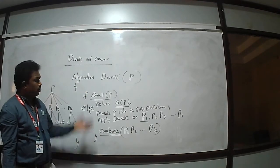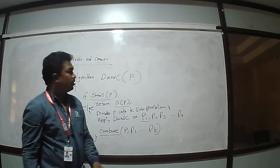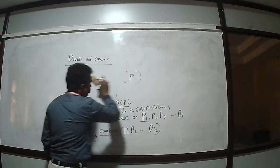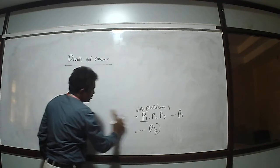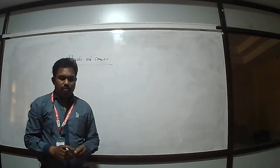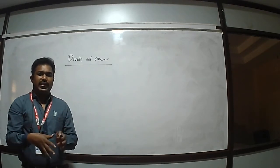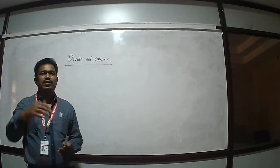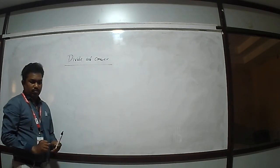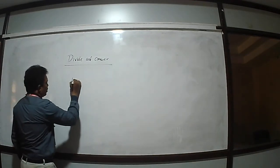We use this Divide and Conquer method to write algorithms for various problems. The applications of Divide and Conquer in computer science are: first, Binary Search; second, Merge Sort; third, Quick Sort; and fourth, Strassen's Matrix Multiplication.